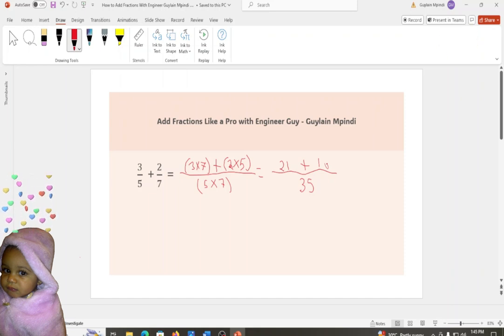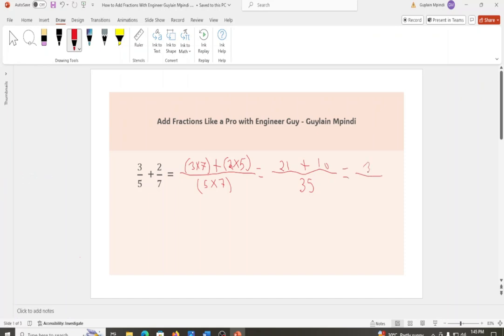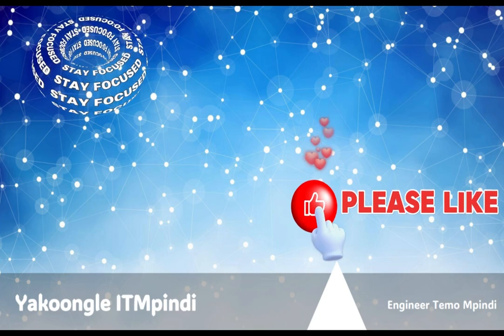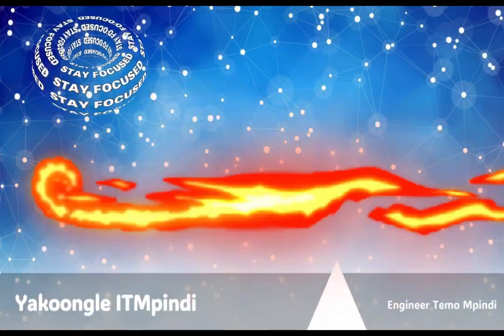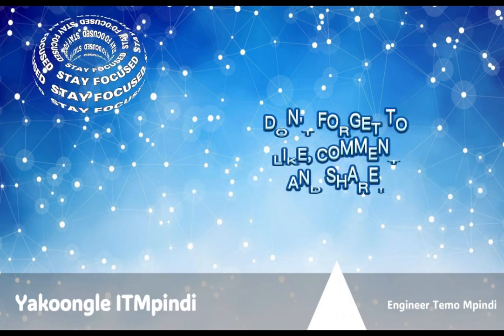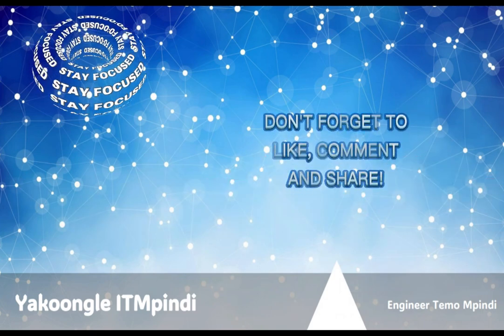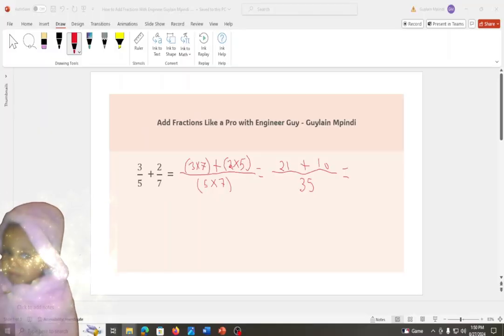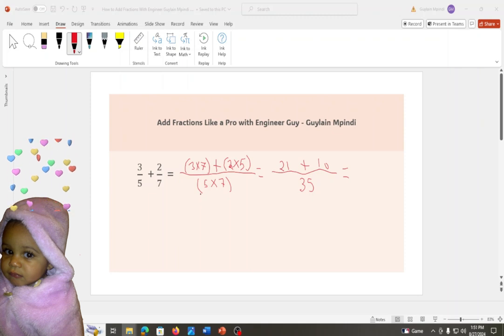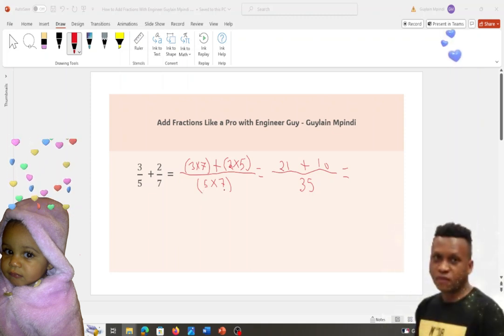Now, 21 plus 10 equal to 31. And don't forget to write 35. So we're gonna write it down here.